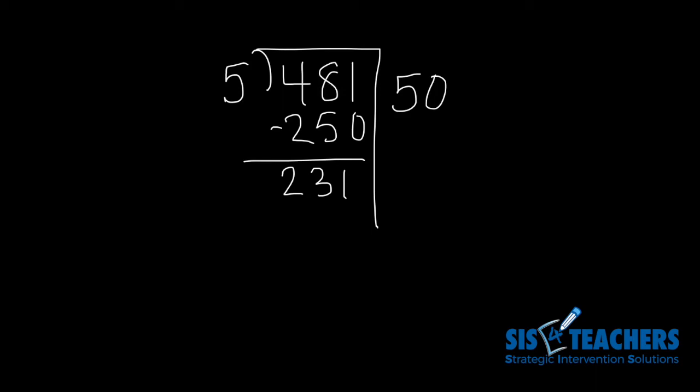So I might go down a little bit and do 40 groups of 5, which would give me 200. So if I take off another group of 200 out of my 231, I'm left with 31 as I'm looking at the problem.